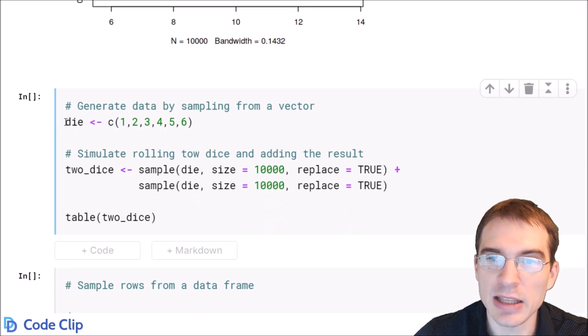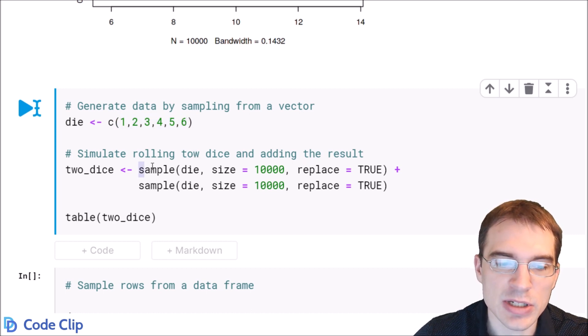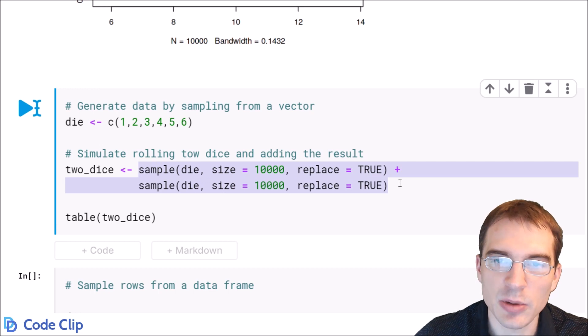Here we're taking a die that we've defined as a vector 1 through 6. And then we can use that to generate some random values. So we're going to sample from this die 10,000 times. And then we're also going to sample again 10,000 times and add the results. Basically what we're doing here is simulating the result of throwing two die at the same time and adding them up.